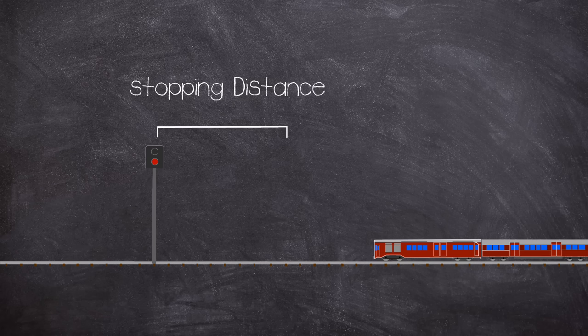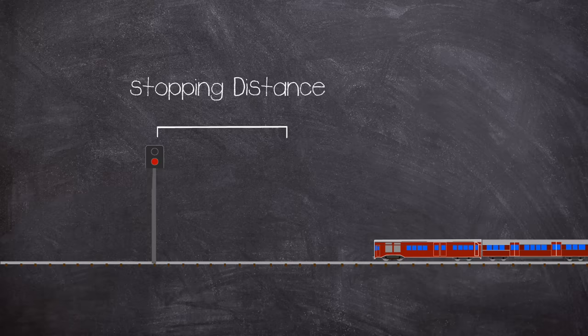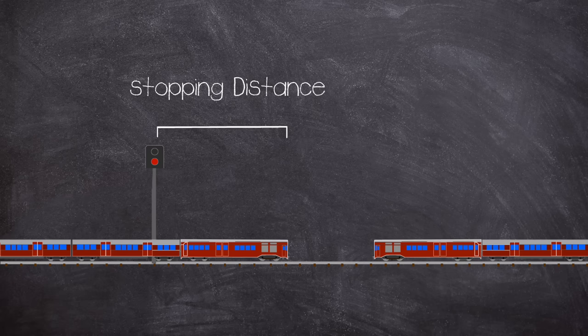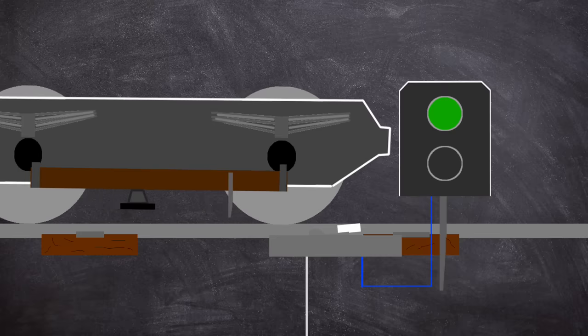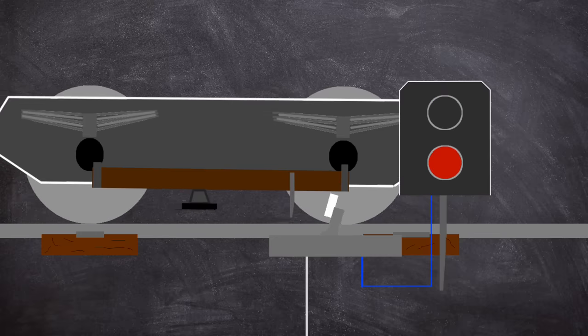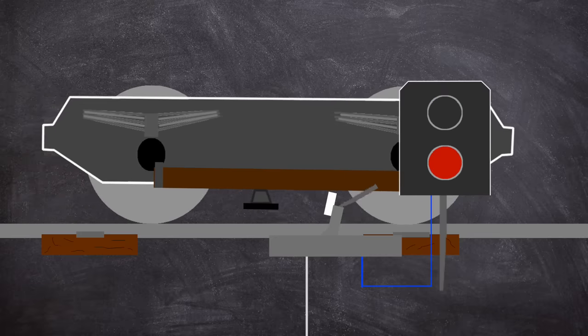Each safe stopping distance is individually calculated per signal for a train travelling at line speed. That is, if a train passes a red signal without authority, then the safety system would grind the train to a halt before hitting a potential train in front. Now how is a train stopped, you might ask? Well, that involves trip cocks and train stops. But bear with me, I'll come back to this in a little bit.